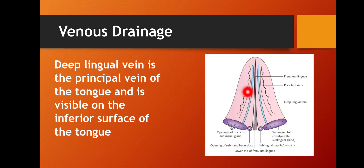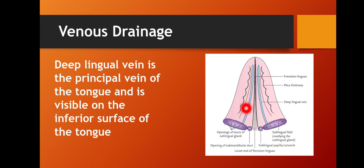See in this picture. This is the inferior surface of the tongue. On the inferior surface you can see two main structures — those are the deep lingual veins. The deep lingual vein is the principal vein of the tongue and is visible on the inferior surface of the tongue.